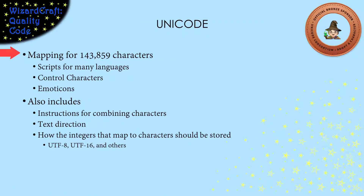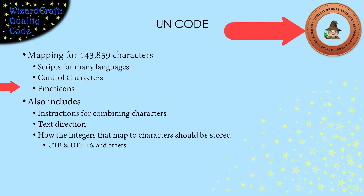Unicode includes the mapping for 143,000 characters. That includes scripts for many languages, for control characters, and for emoticons. You can see up in the left the emoticon that is mine, the female mage. It's important to note that when they designed the mappings for Unicode, they were very careful to make sure that the values for the characters that had already been defined in ASCII stayed the same. So you can look at an ASCII table and see what the Unicode value for those particular characters are. If you want the Unicode value for other characters, you'll have to find a Unicode table to give you their values.